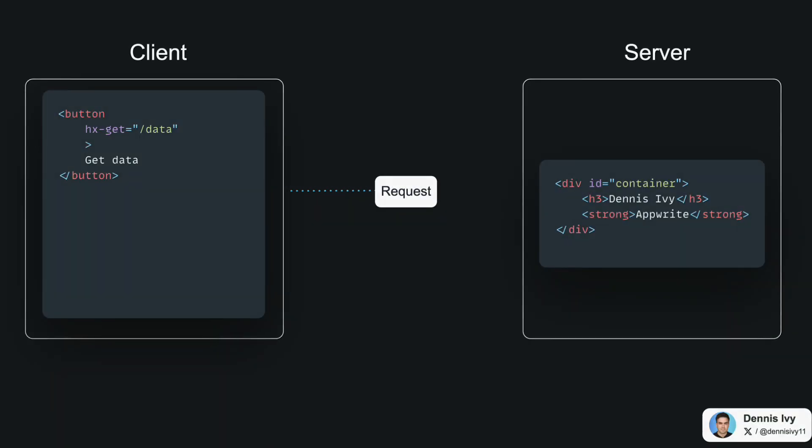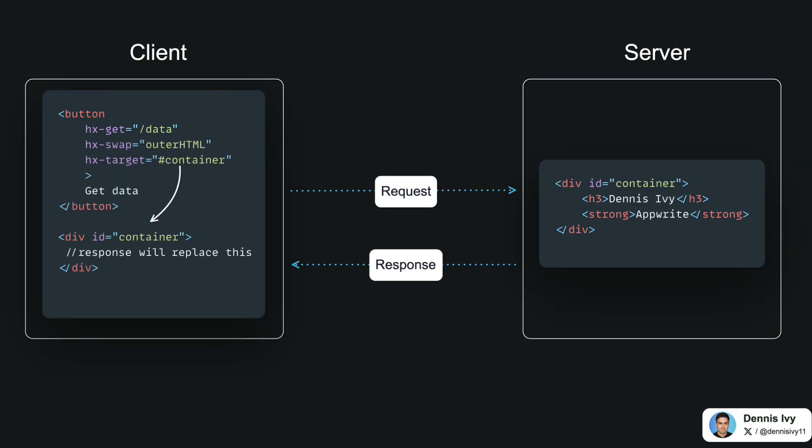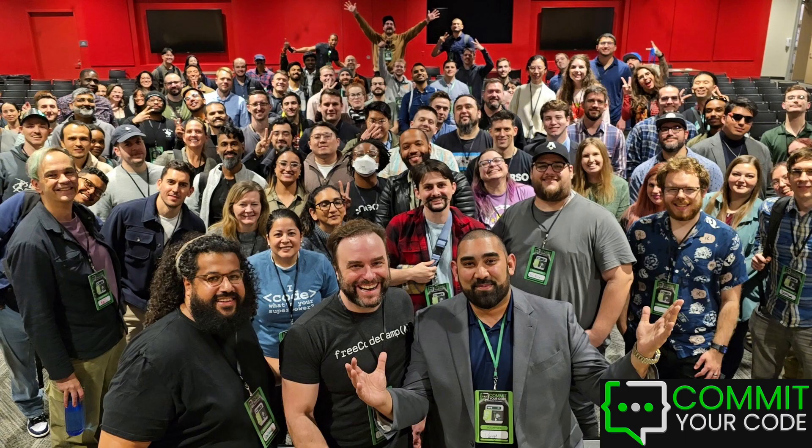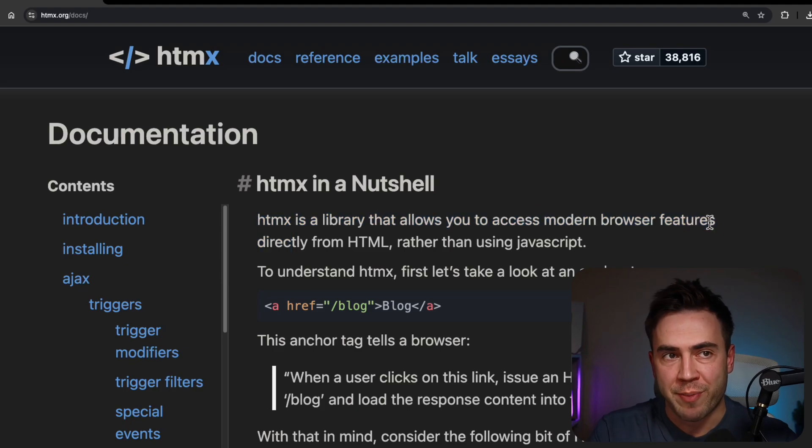The first time I tried HTMX was about a year ago, and it was quite interesting to say the least. They really take this idea of how we build dynamic web apps, how we go about the request-response cycle, and the type of data we transfer — and they flip it on its head. It's like what was old is now new again, but in a new way. I decided my topic for the Commit Your Code conference would be on HTMX, so I built out a single-page application and demoed it in my talk. Now that it's fresh in my mind, I want to share more about it. Let's go straight to the source — the official HTMX documentation at HTMX.org.